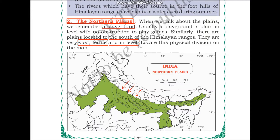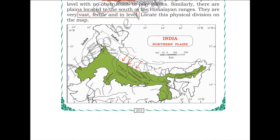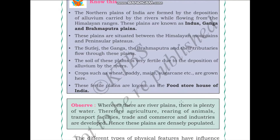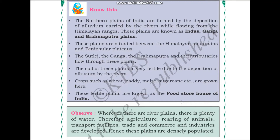Let us locate this physical division on the map of India. As we can see, it is shown in green color. We just learned that the northern plains are located to the south of the Himalayas, which are located in this area.